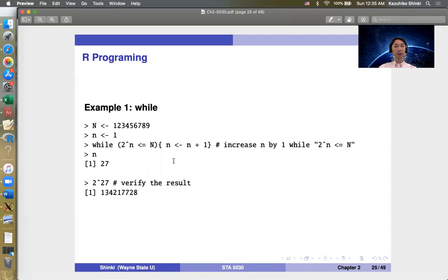Okay, so now we code this for specific N. Suppose capital N is 123,456,789. To get lowercase n to satisfy that condition, at first we start with n = 1. Then we increase n and see if it satisfies the condition 2^n ≤ N. If it's no longer satisfied, then such n is the smallest integer which satisfies 2^n > N. We can use the while loop to do that job. While 2^n ≤ N, we increase n by 1. We define new n by old n plus 1. In this way, we can find the smallest number n.